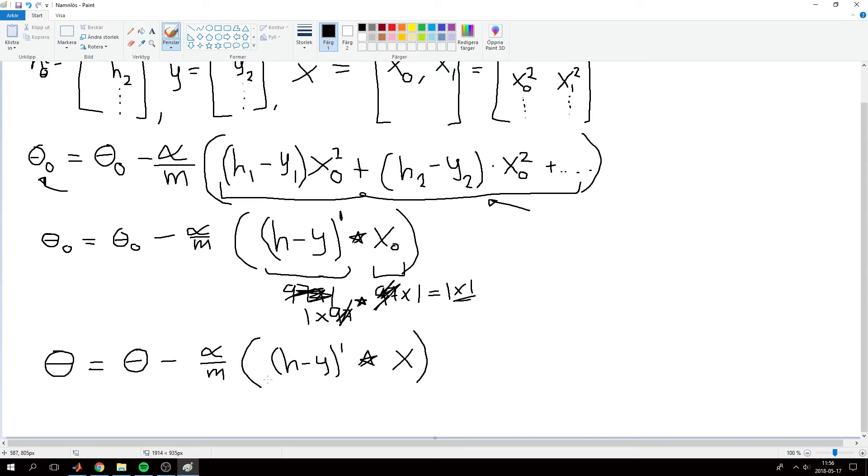So what this gives—this will be a 1 by 97, and x will be a 97 by 2. So this will be a 1 by 2 vector, which will be theta_0 comma theta_1.